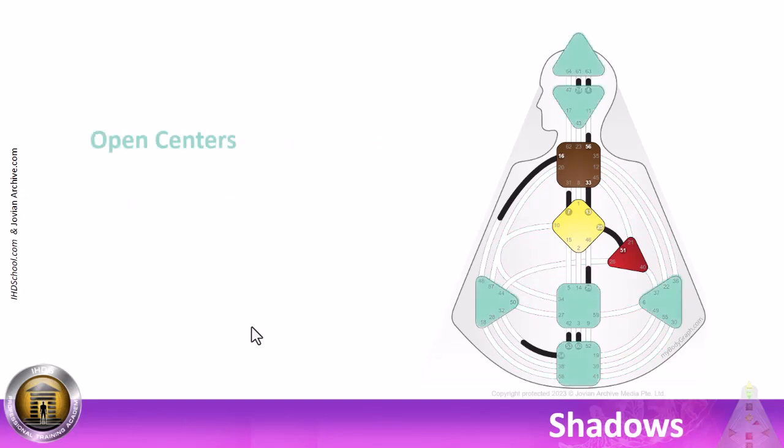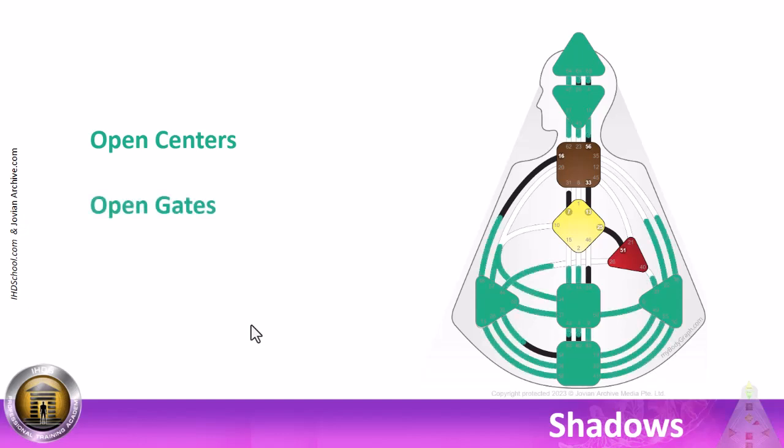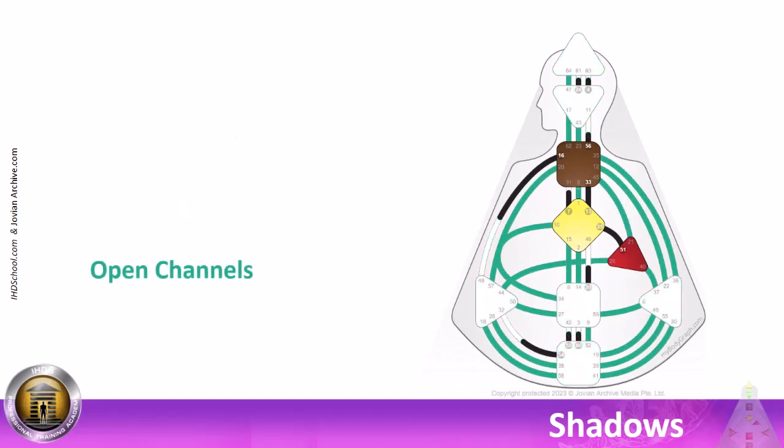It's not just a matter of, oh, we've got these open centers and here's that not-self strategy. But you see, you also have sub themes of the not-self strategies that run out of every single gate that is in those centers. And you have not-self strategies that are in the open centers, open gates, I should say, gates in the open position on the other side. And then you have the quantum of that not-self strategy that emerges in an open channel.